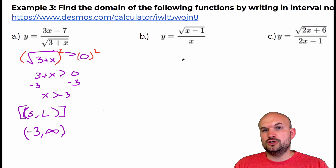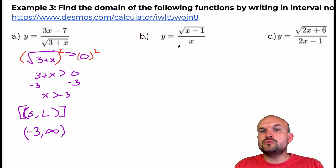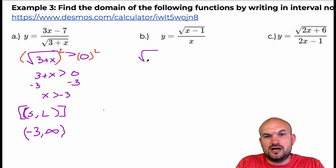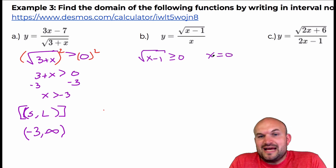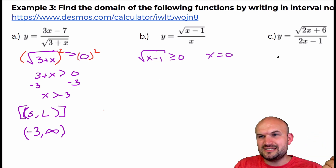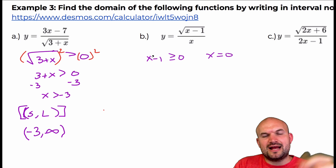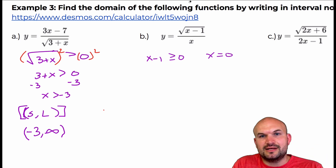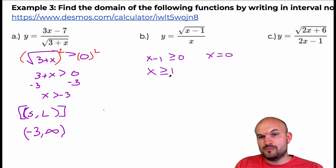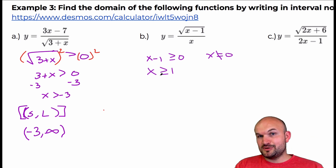Next, I'm putting the radical in the numerator. This is important because we have two restrictions here: we have a radical, and we also have a variable in the denominator, so I'll set them separately. I have the square root of x minus one — since it's not in the denominator, it has to be greater than or equal to zero. And then I have x equal to zero from the denominator. Just take whatever's under the radical and set it greater than or equal to zero. Solving gives x is greater than or equal to one, but x equal to zero makes it undefined.